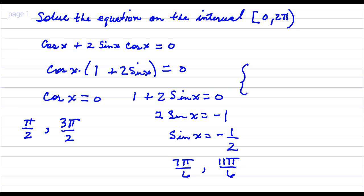Okay, so the solution to this equation is pi over 2, 7 pi over 6, I'm just writing these in order, 3 pi over 2, and finally 11 pi over 6.